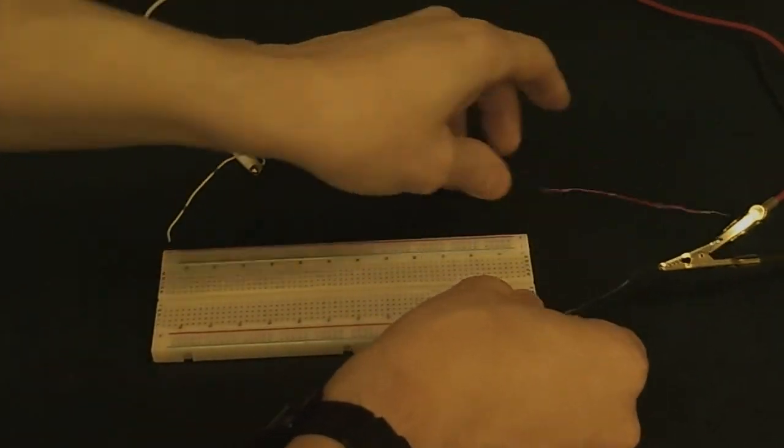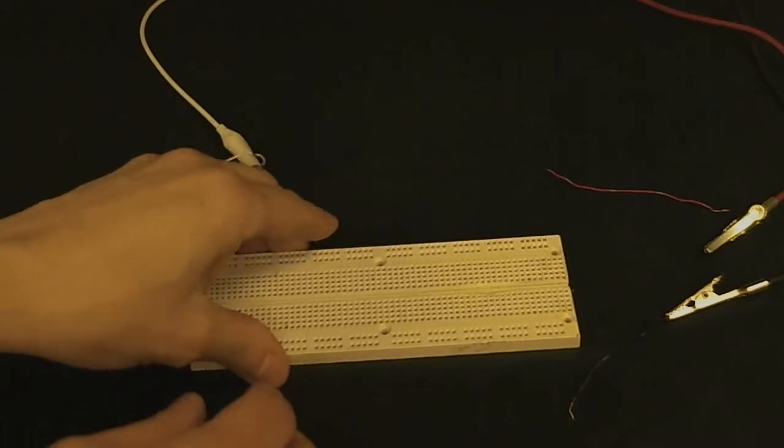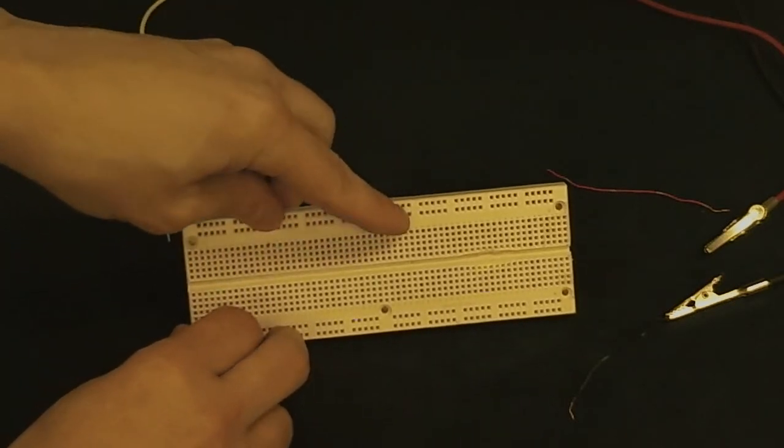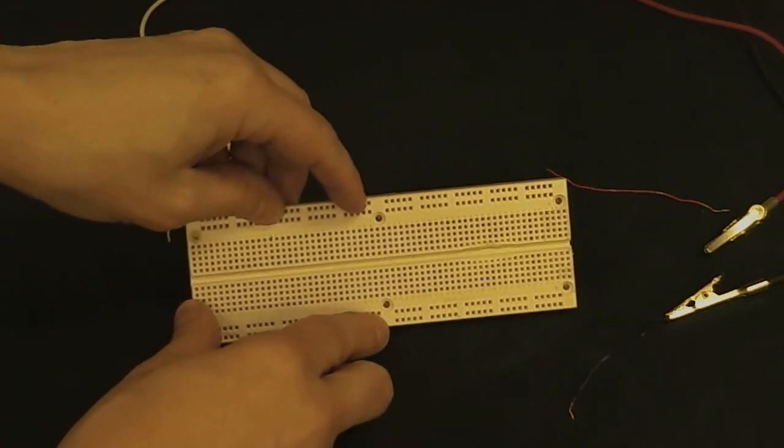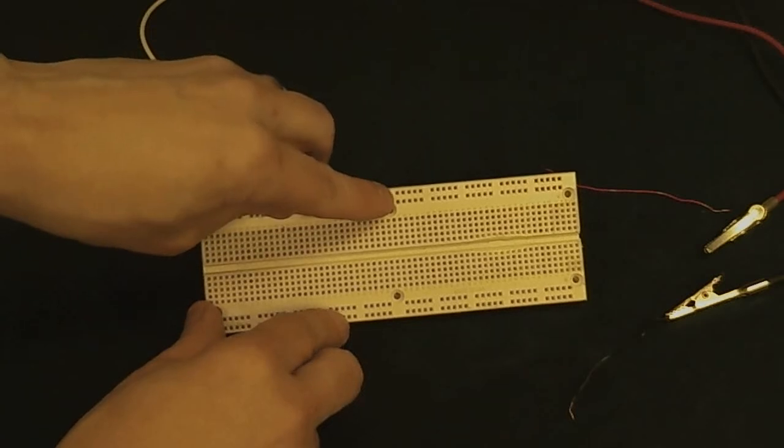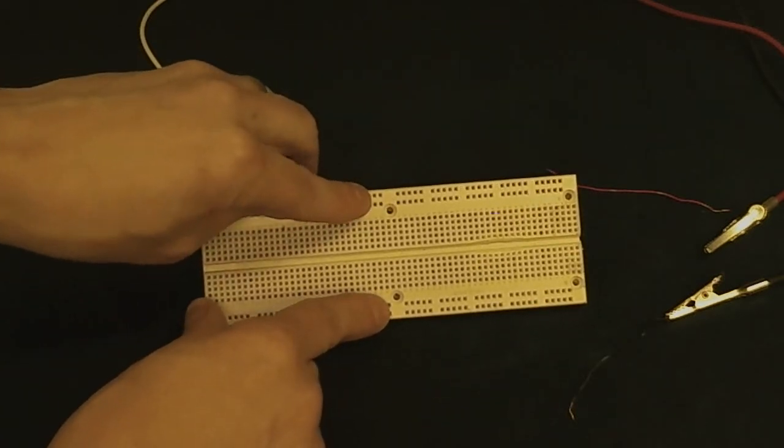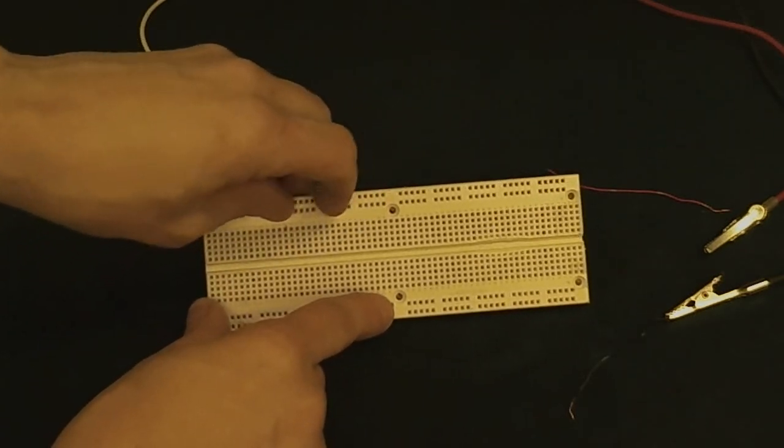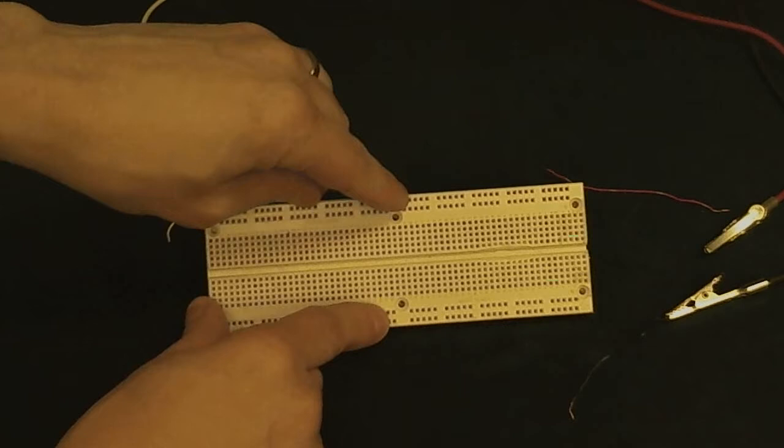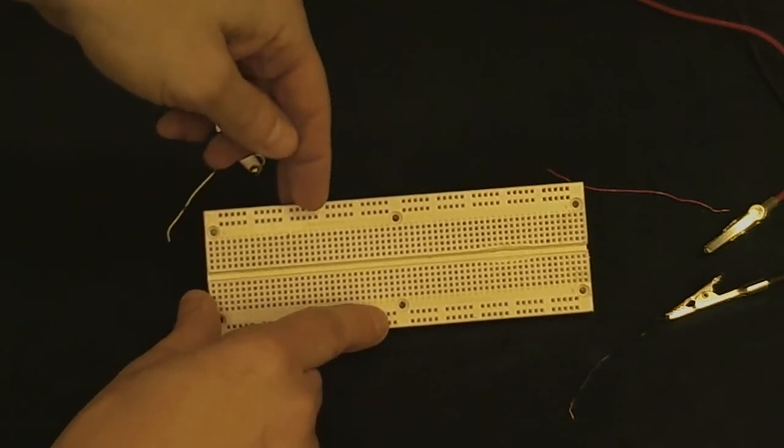Another kind of breadboard that we have, here's another breadboard that again has two rows at the top and two rows at the bottom. The only difference is, with these boards, this break in the middle means that actually these buses don't carry across. So in fact, this is actually eight separate buses.